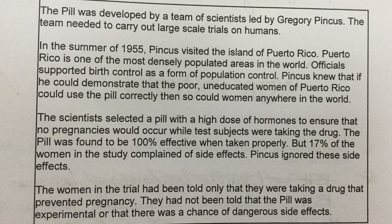Just pause this frame and have a read-through of the information. The question asks you to evaluate the methods used by Pincus in trialling the contraceptive pill. When you're asked to evaluate, they want you to say the good things and the bad things — what are the limitations? And when you write your answers, you need to be explaining: I'm writing this because it's good, I'm writing this because it's bad.